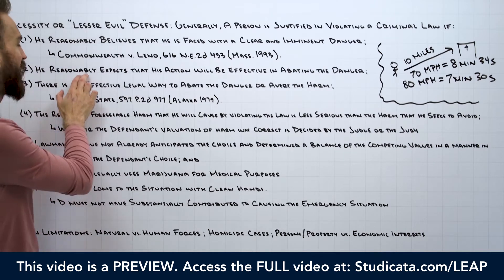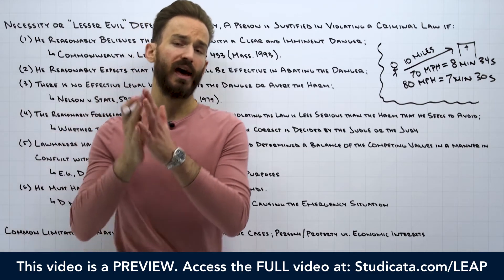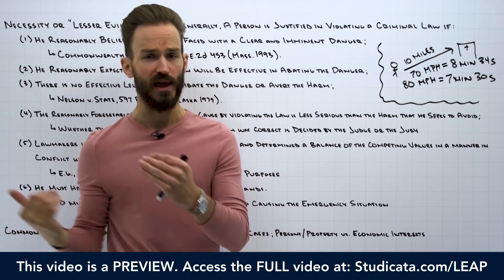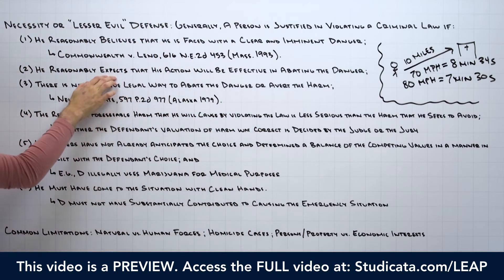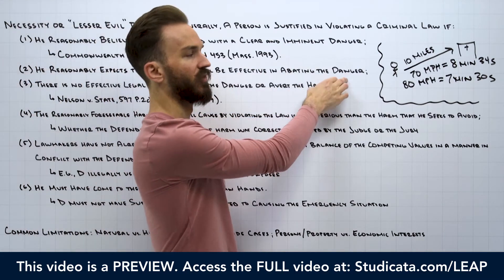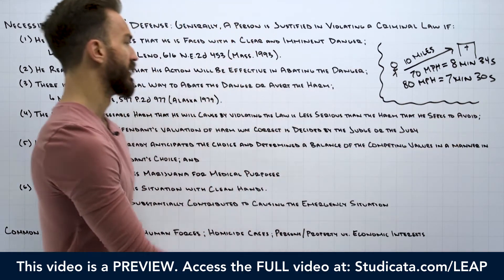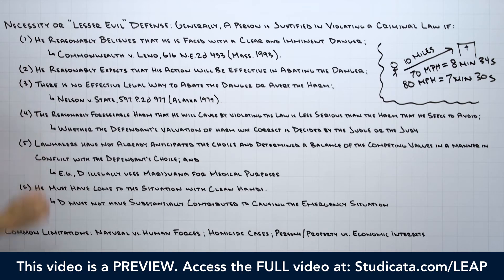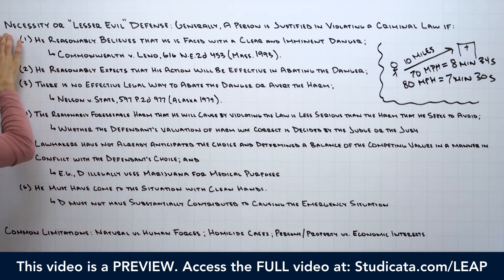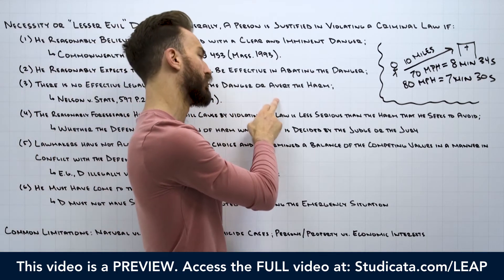This second condition is an objective test — it just has to be reasonable. You can't violate a law in some way that really doesn't help your situation. But this one's usually fairly obvious — people aren't randomly violating laws unrelated to their situation. The third condition: generally a person is justified in violating a criminal law if there is no effective legal way to abate the danger or avert the harm. There can't be a legal alternative to violating the law.